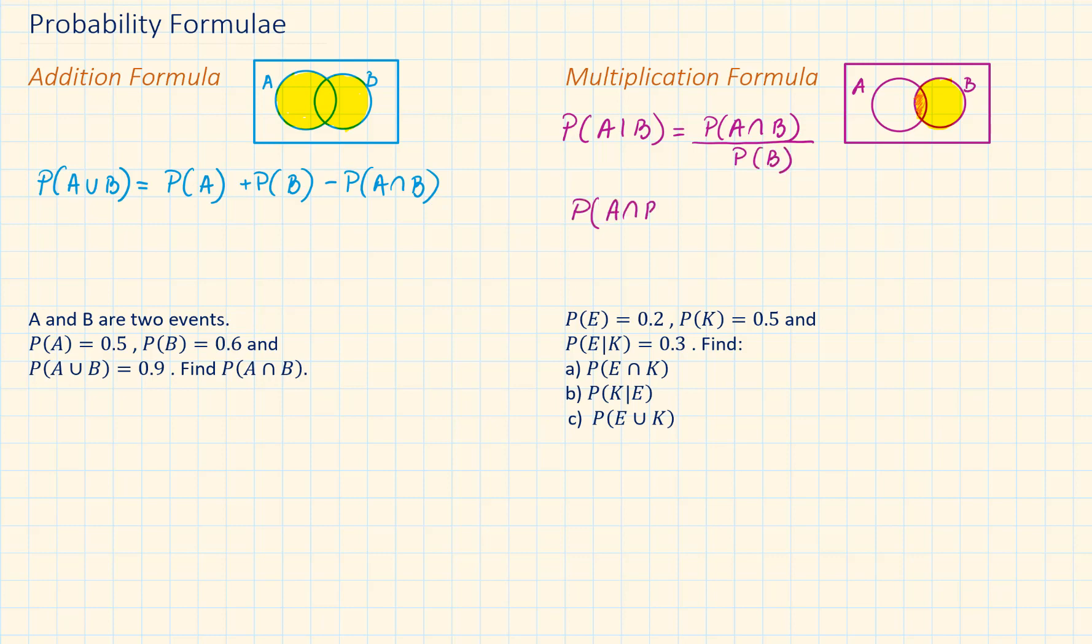The intersection can also be referred to as the AND rule only when the two events are independent. However, the complete correct version of the intersection formulae is probability of A given B times probability of B. This is also equal to probability of B given A times probability of A.